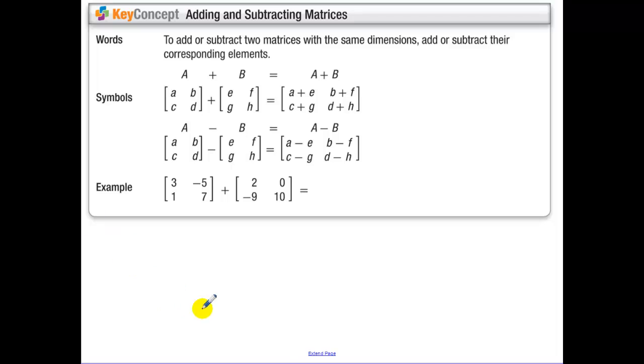Adding and subtracting matrices. In order to add and subtract two matrices, they have to have the same dimensions. And yes, you're writing this down. You add and subtract their corresponding elements. So first column, first row, those are the ones you're going to add together, and so on and so forth.